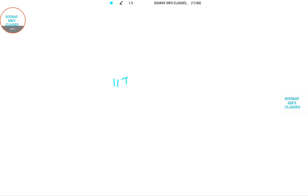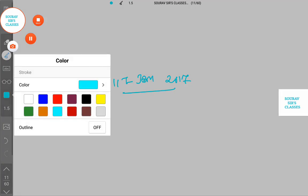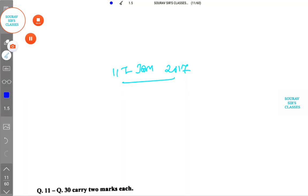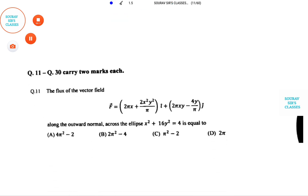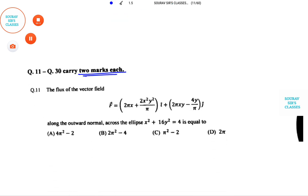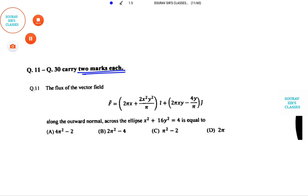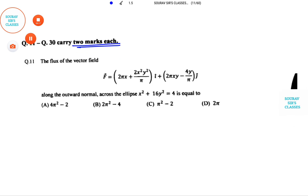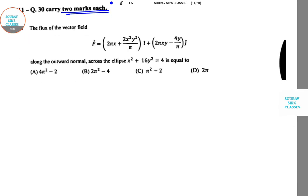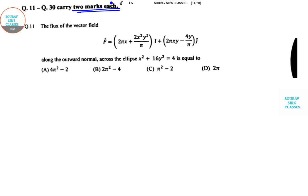This is part 4 of IIT JAM 2017 solution. I need to use a bright color here. I am solving from question number 11. The questions are getting tougher as everyone is having two marks now. The flux of the vector field is F = (2πx + 2x²y²)i + (2πxy - x²/π)j along the outward normal across the ellipse x² + 16y² = 4.